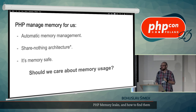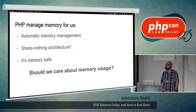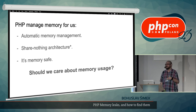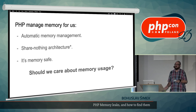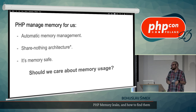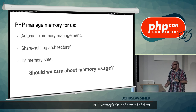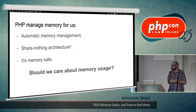PHP also has something called a share-nothing architecture. That basically means every request in PHP starts from scratch without any previous state. If you want to share data across requests, you usually need to put it into a database or some other form of external storage. This provides PHP programmers a lot of luxuries, because we don't need to care about memory so much — with the next request, no data will leak from one request to another. This is true for PHP-FPM and Apache.